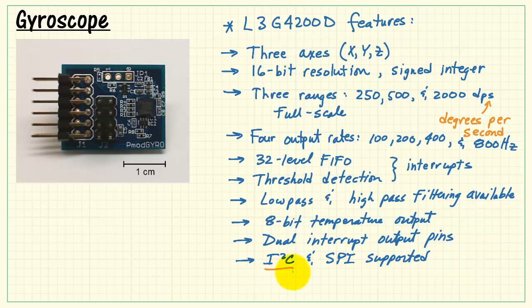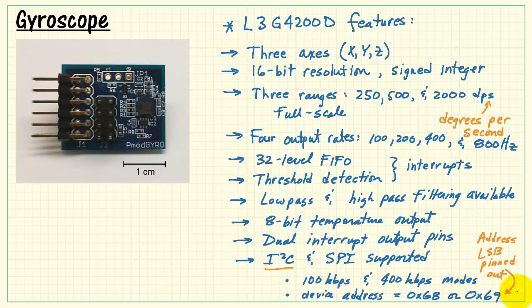Serial buses supported include I2C and SPI, and I'll be focusing on I2C in this video. It supports standard and fast modes.